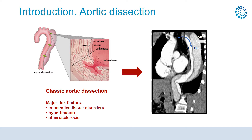The inner layer — the intima of the aorta — tears, and blood surges through the tear, creating a new false channel called the false lumen, separating the middle layer from the outer layer of the aorta, the adventitia, by a flap.